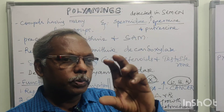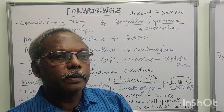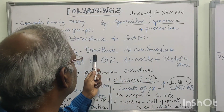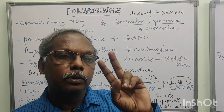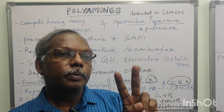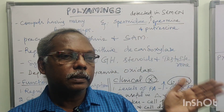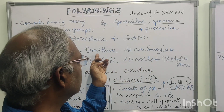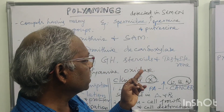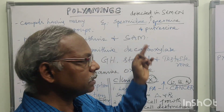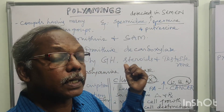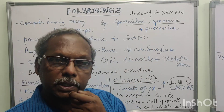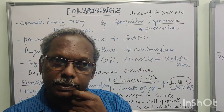For this pathway, which is a very small pathway, what is the name of the regulatory enzyme? Two decarboxylation reactions occur: one enzyme is ornithine decarboxylase and another is SAM decarboxylase, but the regulatory enzyme is ornithine decarboxylase.